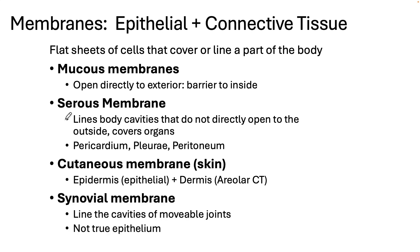Synovial membranes line cavities of movable joints. Unlike the other membranes, the synovial membrane consists only of connective tissue — no epithelial tissue is present. Synovial fluid is secreted and lubricates and nourishes the cartilage covering the bones.